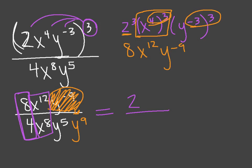Now when I look at my x's. Since these two x's are on top of each other, I'm using subtraction. So 12 minus 8 is 4. And then my bigger x's were on the top of the fraction, so that's where I'm going to put my answer.